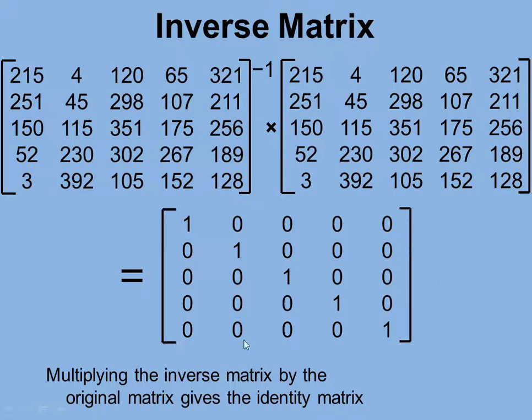Which is, in matrix terms, like the number one. If you multiply a matrix by this, you get the same matrix back again. Any matrix multiplied by the identity matrix just gives the original matrix.